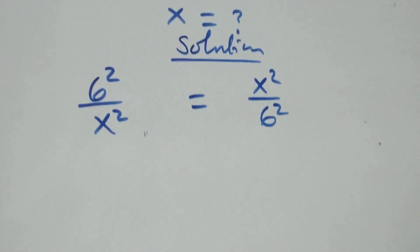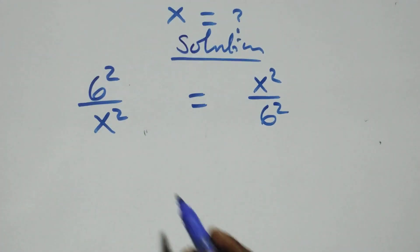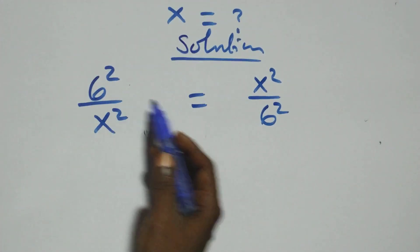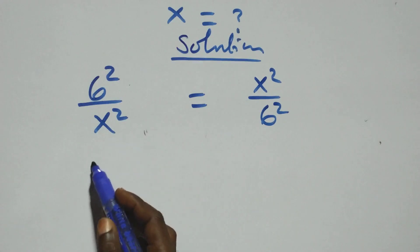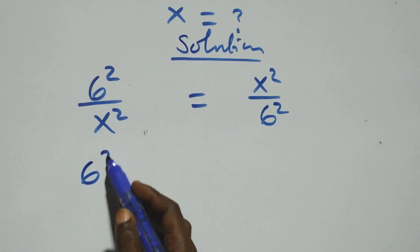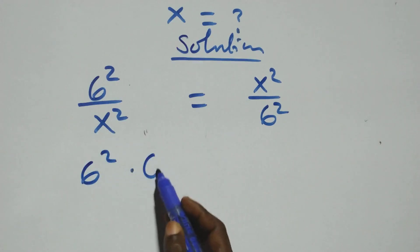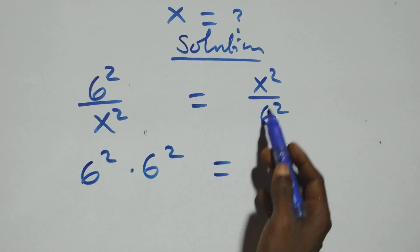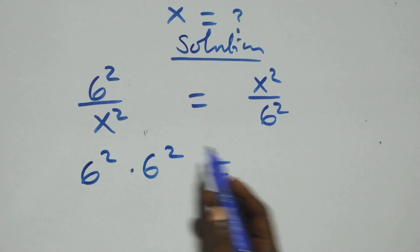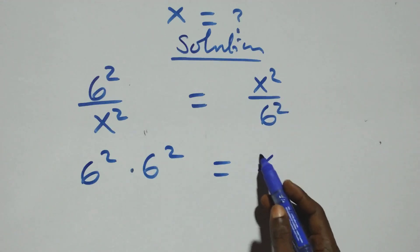The next step here, we cross multiply: we have 6 squared times 6 squared, then equals to x squared times x squared.